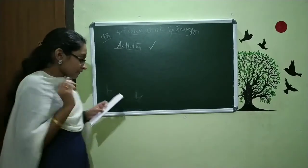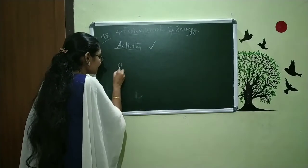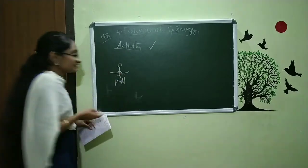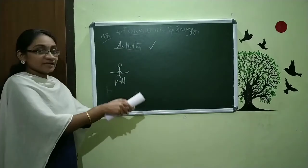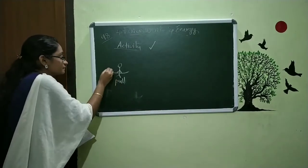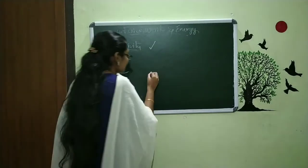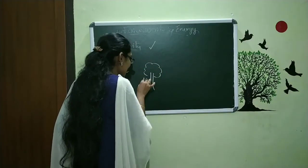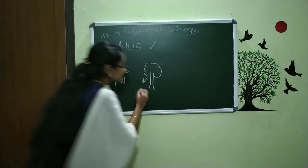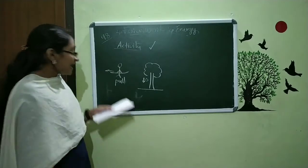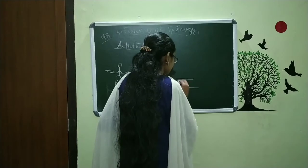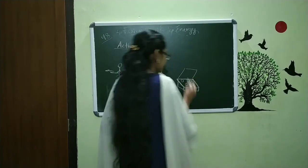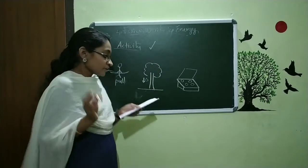The first picture is this: one person is standing with a rope in his hand and he is pulling this rope. The second picture is a tree, and one apple is falling from this tree towards the ground. The third picture is a box filled with things — this box is not moving at all, it is just placed on a surface.